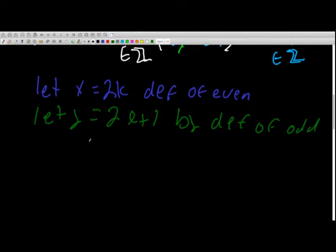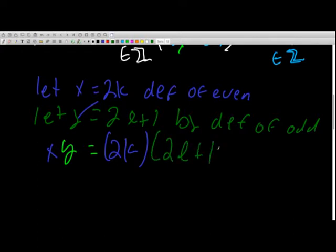Okay, now let's actually just multiply these. So I'm going to take a color for x and then I'm going to take our color for y, and that's multiplying them together. And we're going to say 2k times 2l plus 1, 2l plus 1.